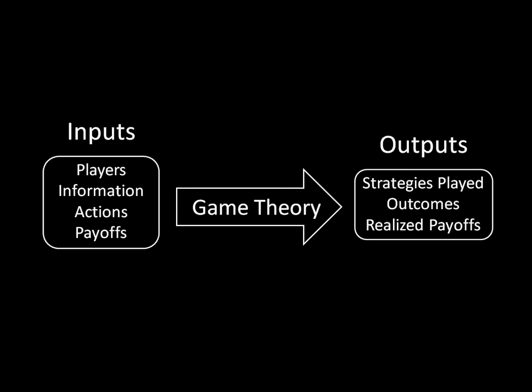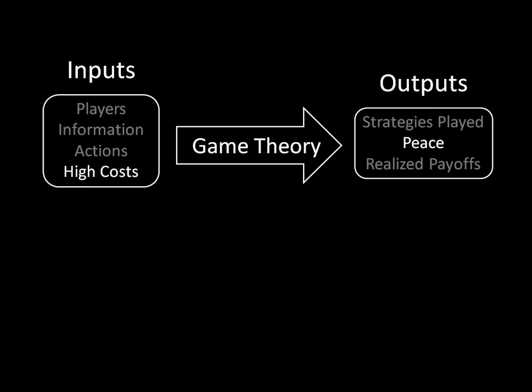This is useful for establishing causal relationships when we vary the inputs. For example, imagine that we're interested in studying warfare. We have some number of players, some information, some actions, and some payoffs. In the particular case we're going to look at first, there are high costs to war — so if the players reach any outcome where war occurs, they will pay high costs for engaging in that combat. We take those as inputs, use game theory to find the equilibrium, and get the outputs. We have some strategies, some realized payoffs, and a qualitative outcome. And maybe the outcome of that game is peace. So here we have high costs leading to peace.